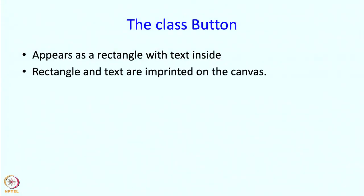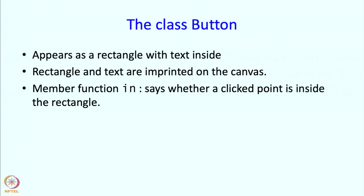Next we discuss the class button. A button appears as a rectangle with text inside it. The rectangle and text could be made graphics objects, but since we are not going to move the rectangle or change the text, we simply imprint them on the canvas. We will then have a member function called 'in' which says whether a click point is inside the rectangle — that is how we determine whether a button has been clicked.